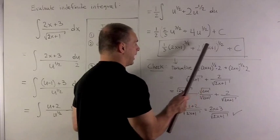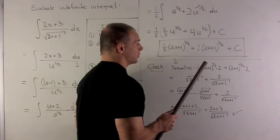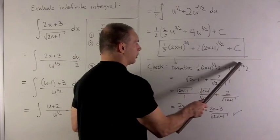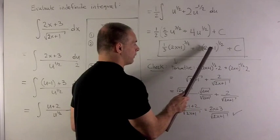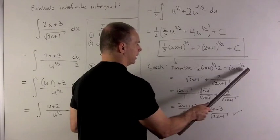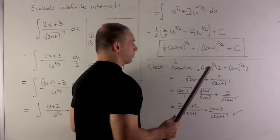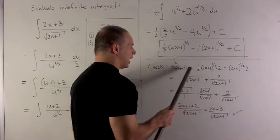On this term, the 1 half comes down, gets rid of the 2, we drop the exponent by 1, and then we take the derivative of the inside by the chain rule, and we get a 2. Constant term goes away. Now we just have to clean this up.